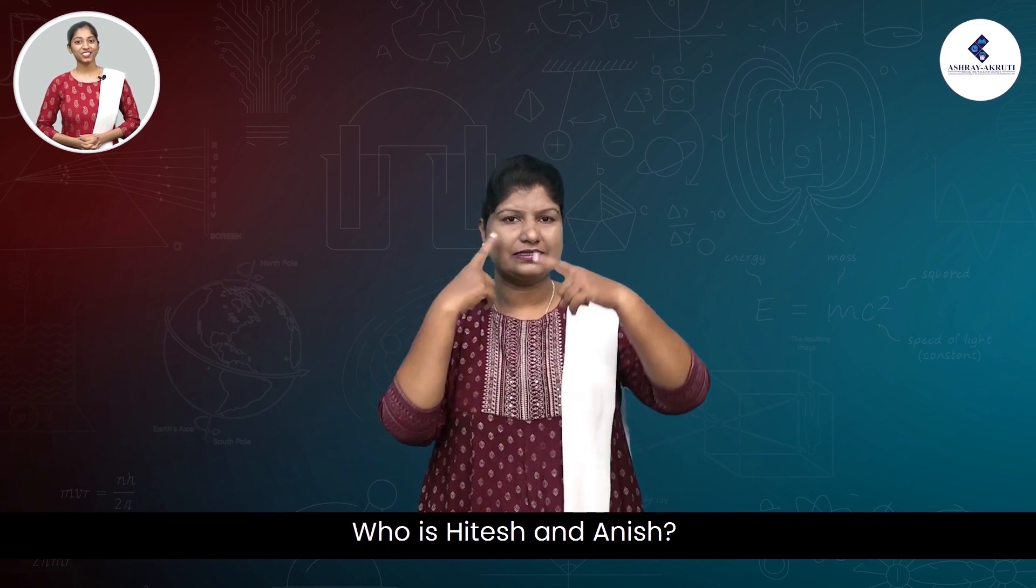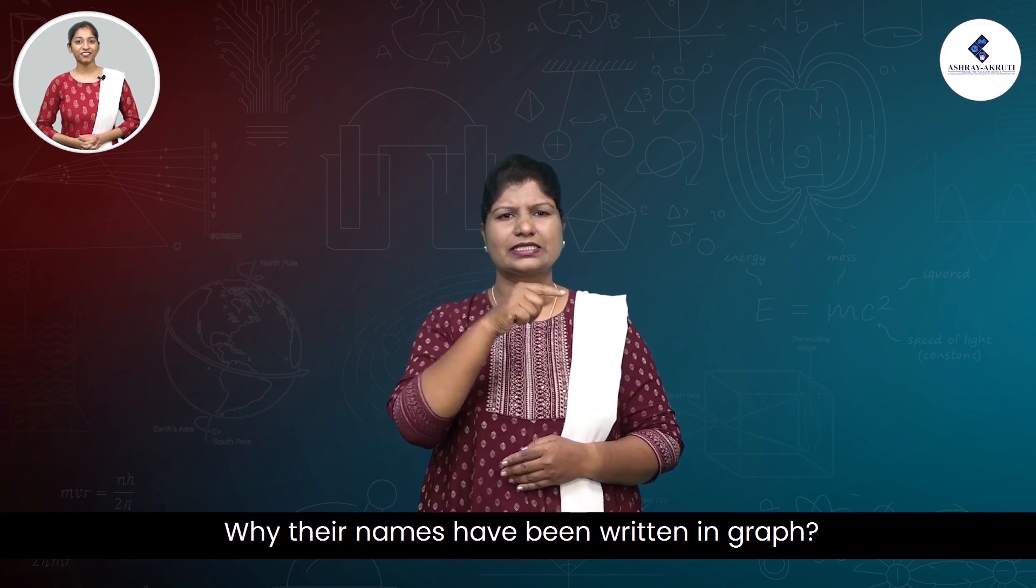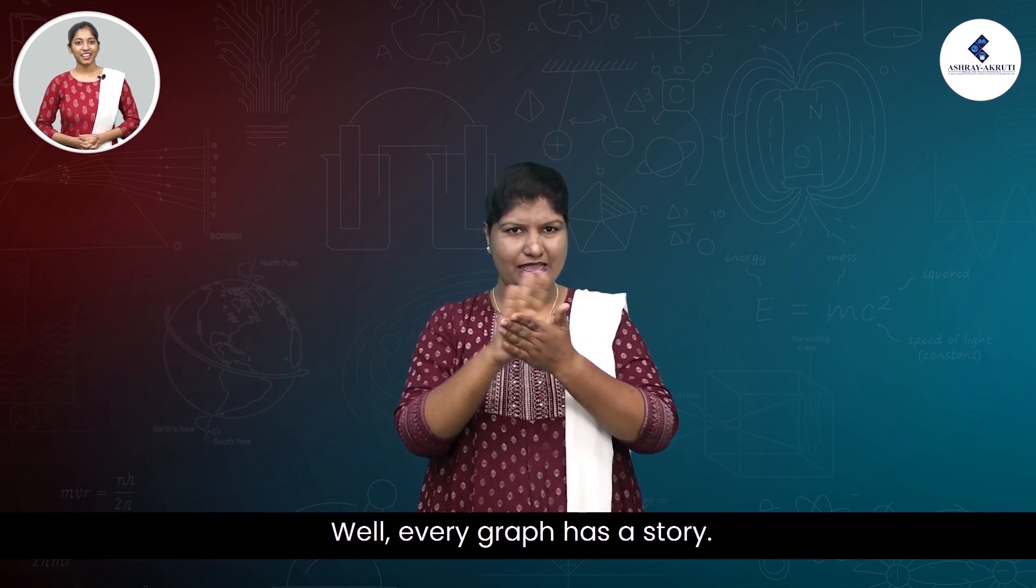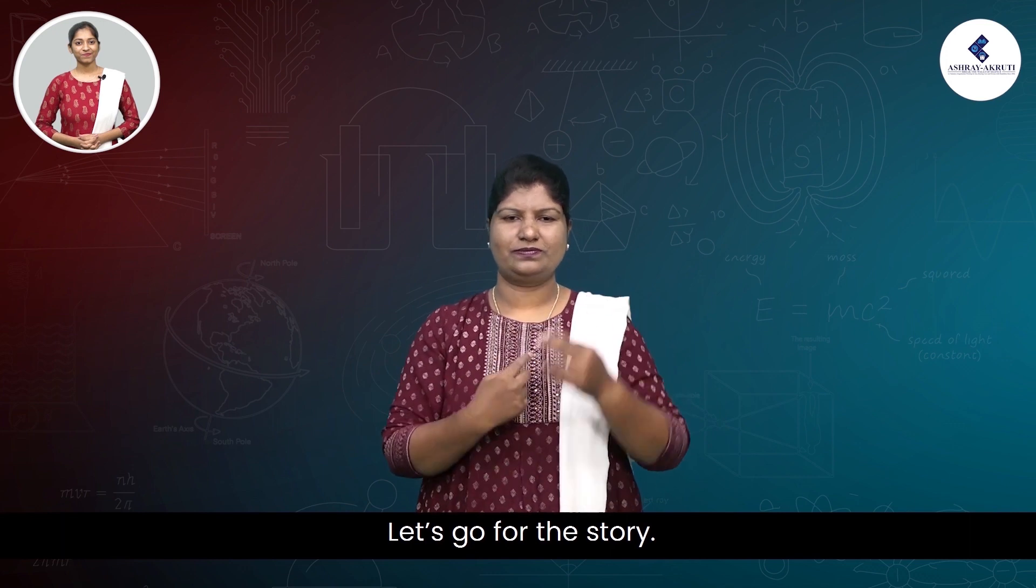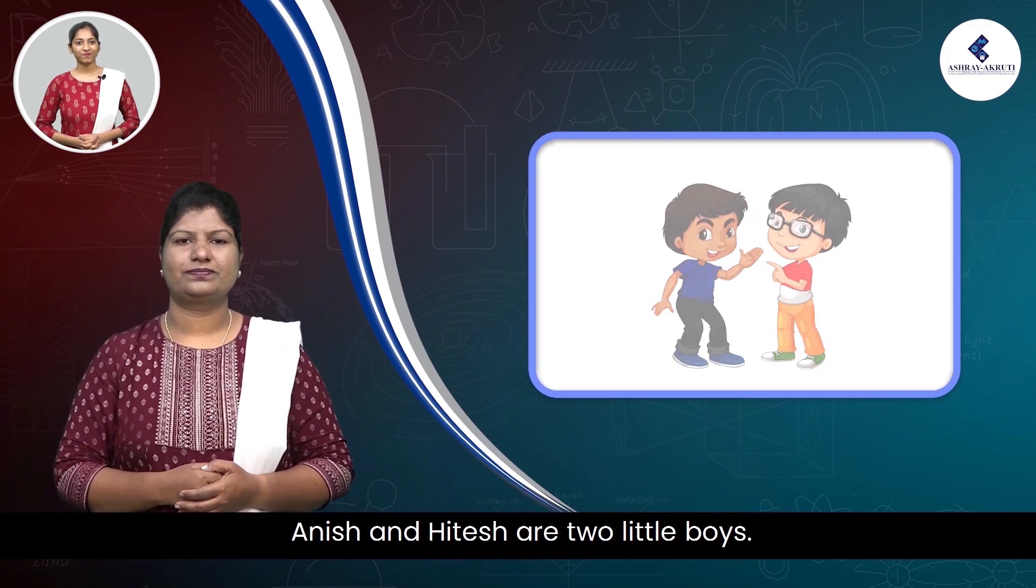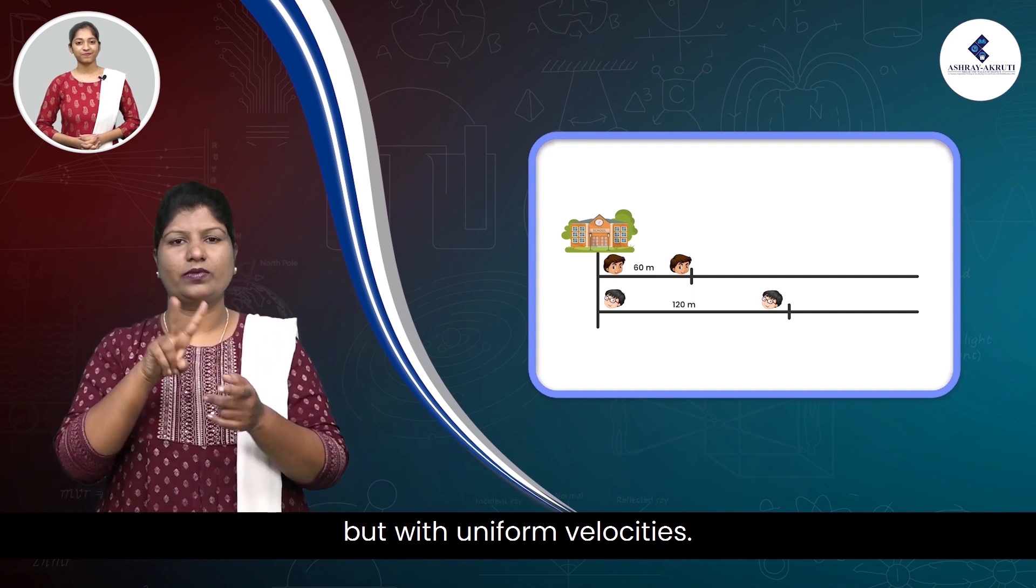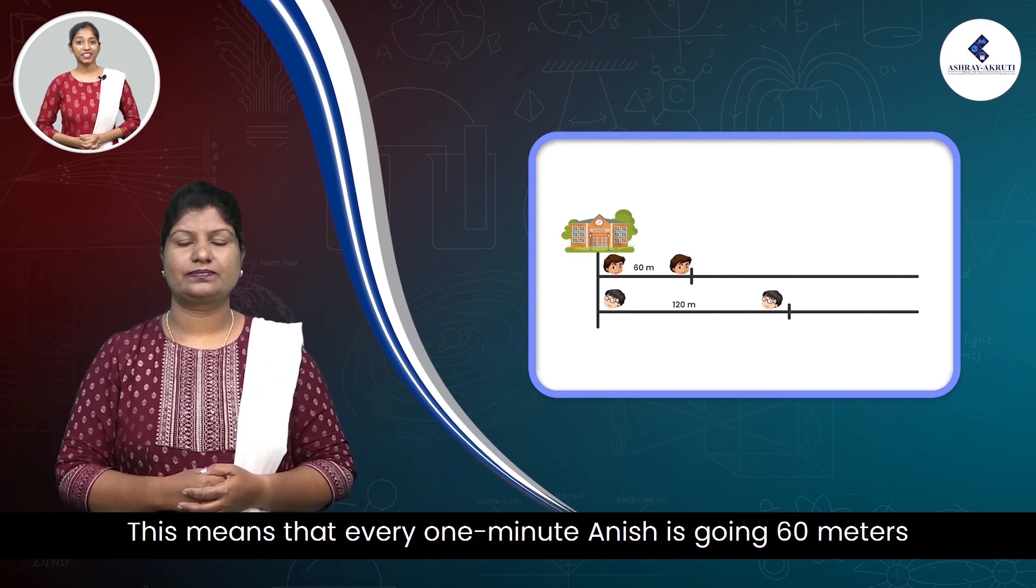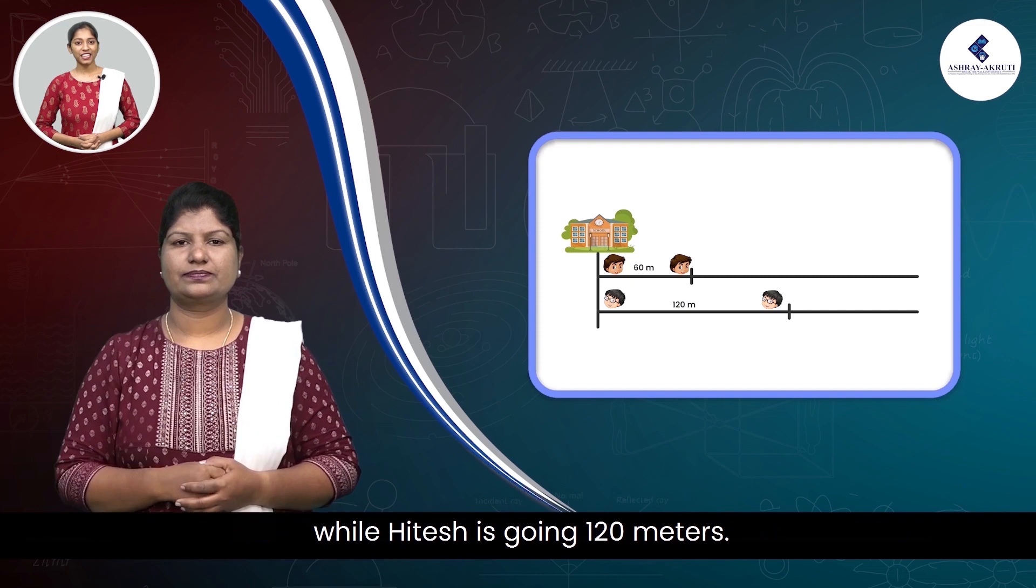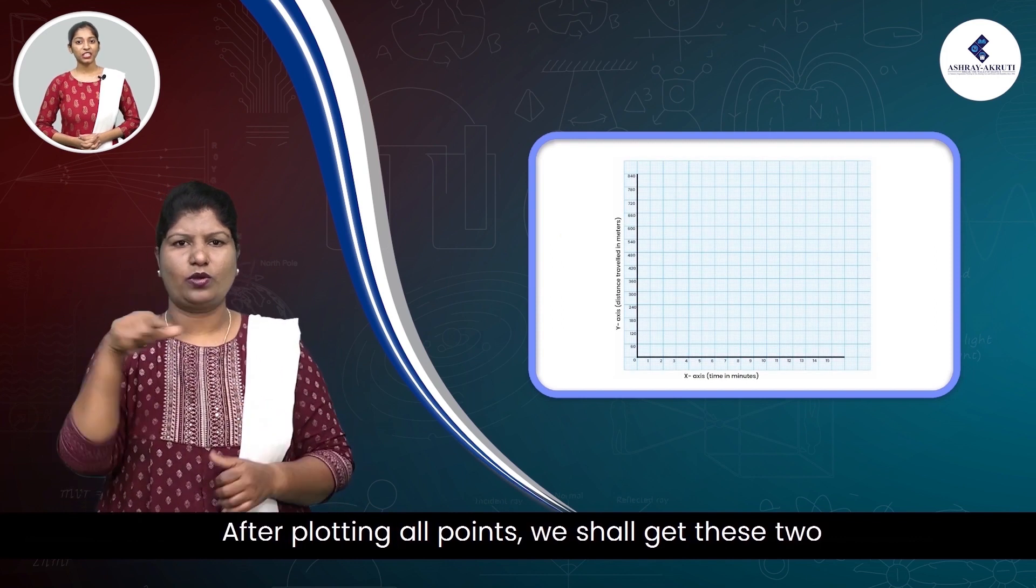Who is Hitesh and Anish? Why have their names been written in the graph? Well, every graph has a story. Let's go for the story. Anish and Hitesh are two little boys. They are coming from school at different speeds but with uniform velocities. This means that every one minute, Anish is going 60 meters while Hitesh is going 120 meters. After plotting all points, we shall get these two.